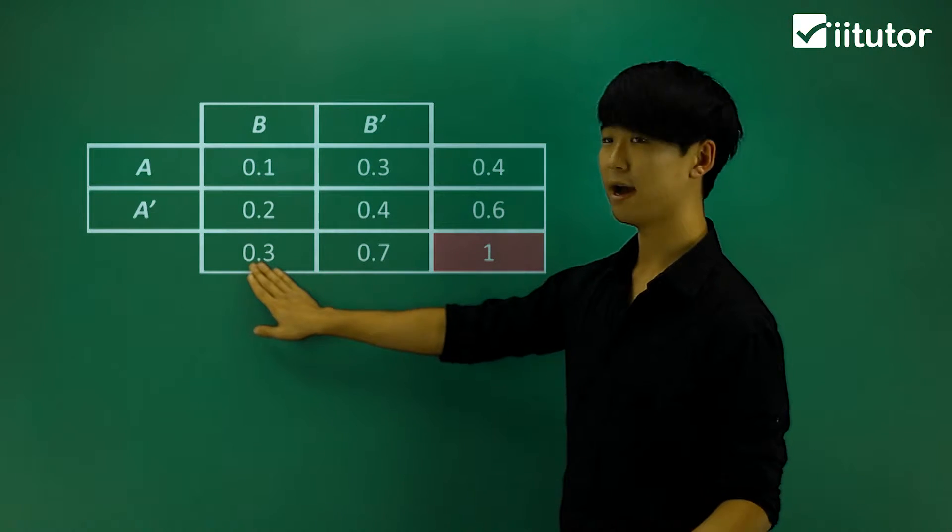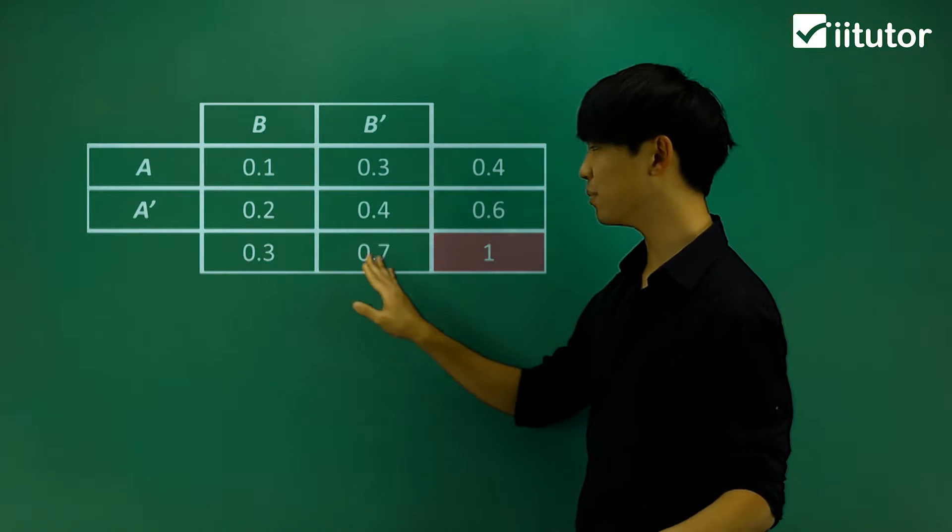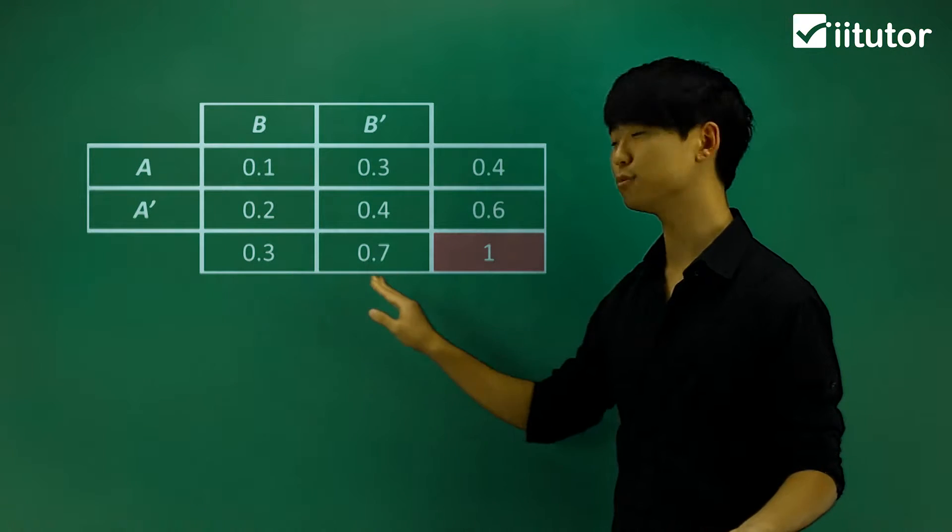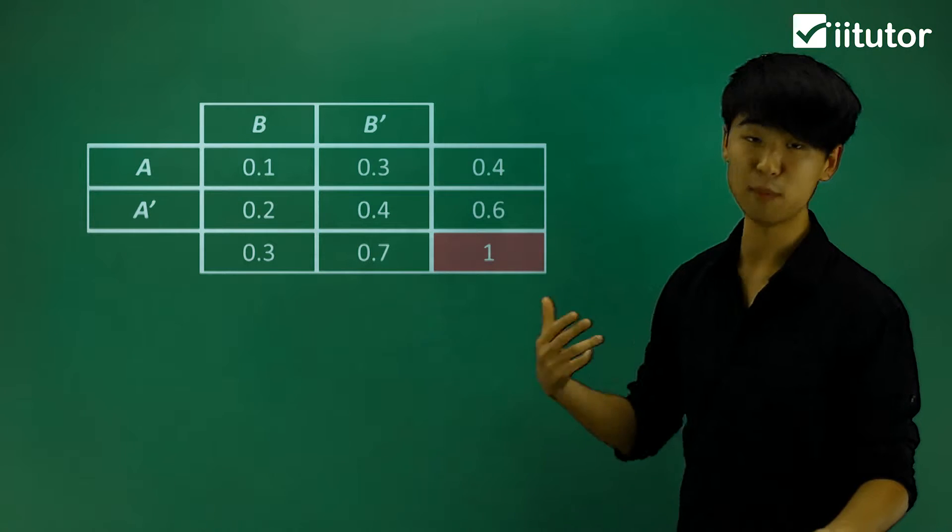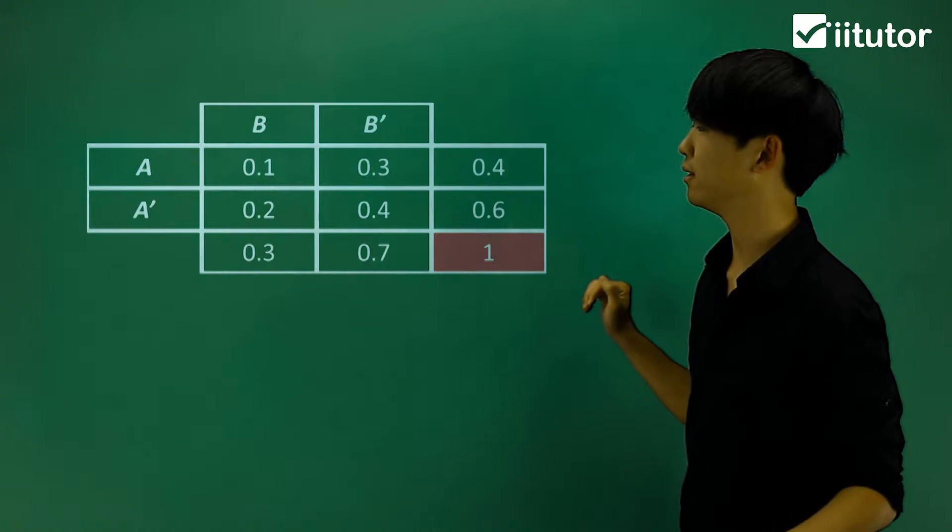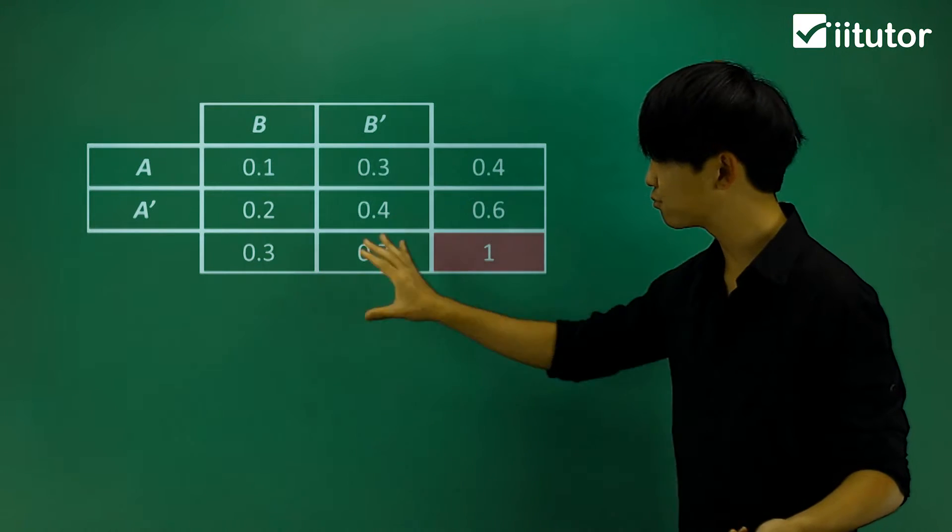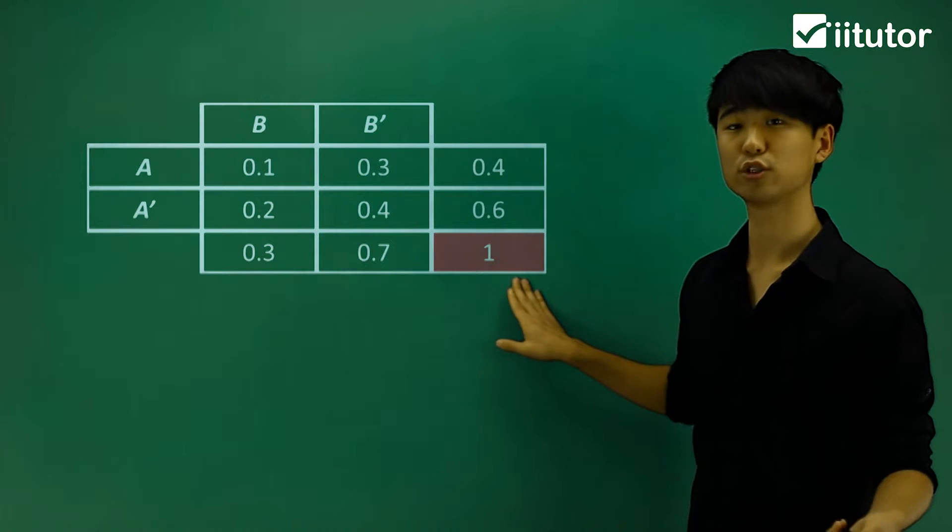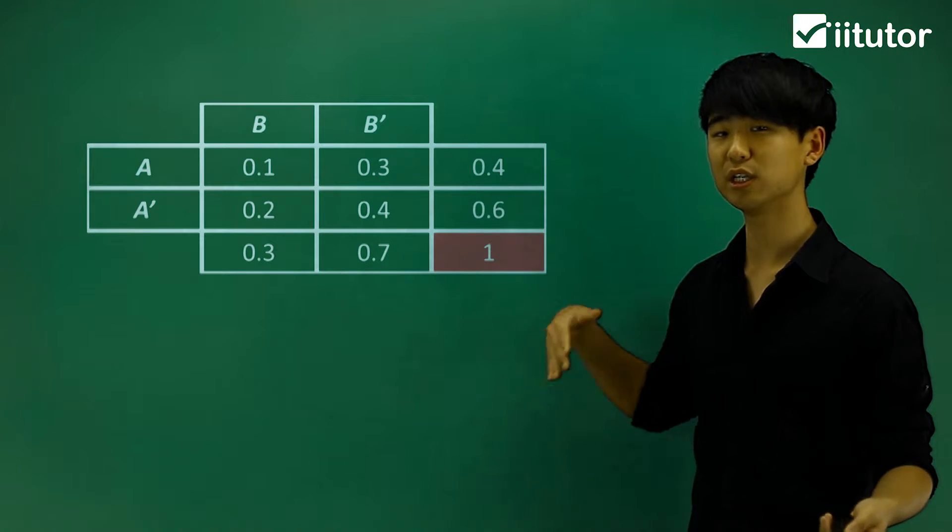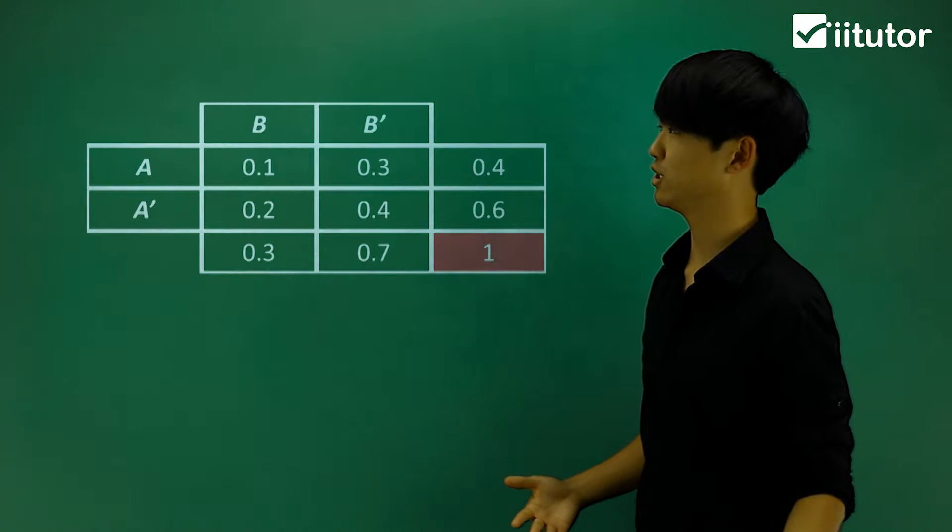My event B and the complement of B should add up to equal 1. Same thing here. The event of A and the complement of A should add up to 1. So the whole of this probability table should always result to 1 there. Let's try and work with these probability tables to answer some questions.